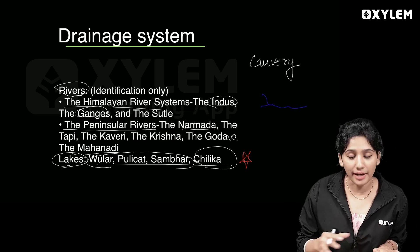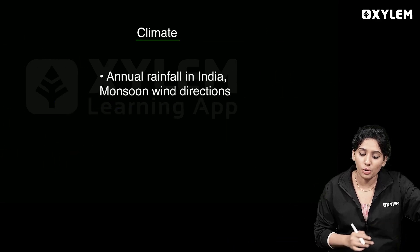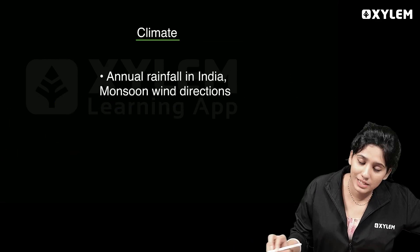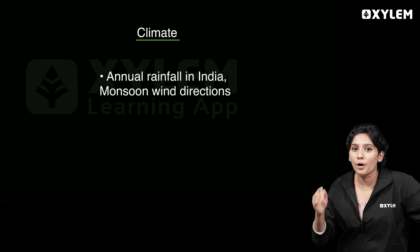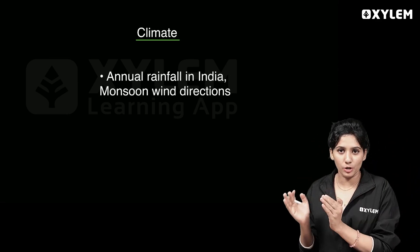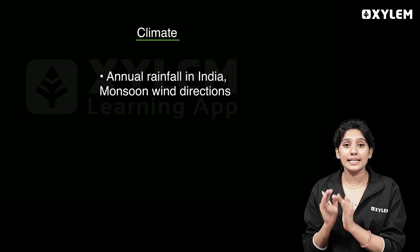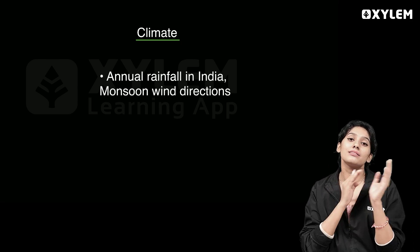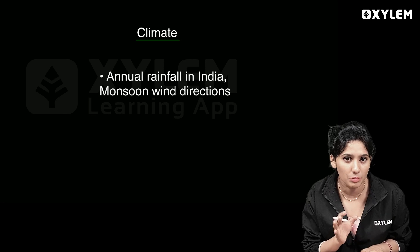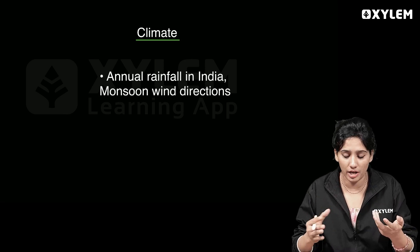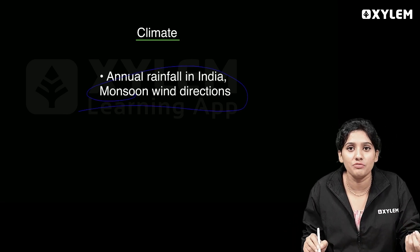Our drainage system chapter covers these map questions. Next, the sixth chapter: Climate. In the climate chapter, you can put a map from the textbook. Monsoon and its wind directions are important to mark in India.